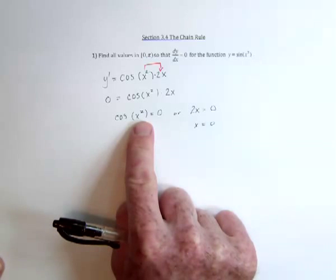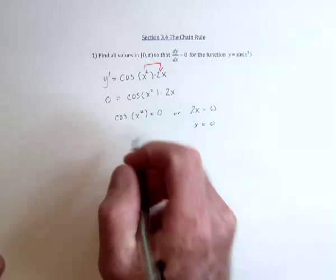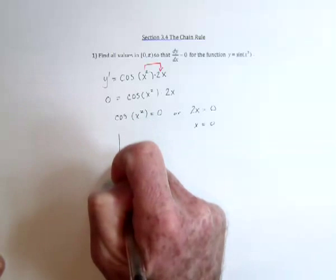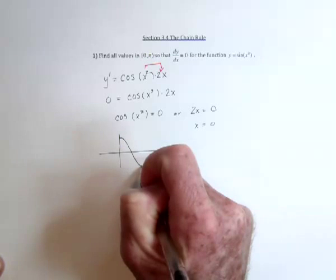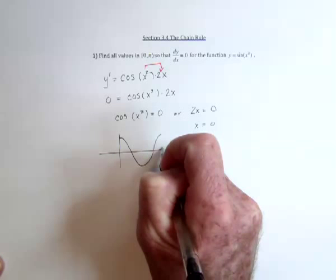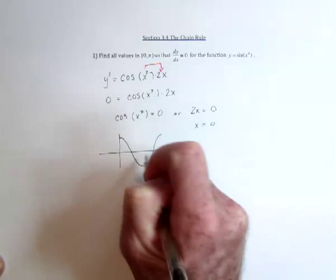And then for this one, we've got to find out where does cosine equal zero. So take a look at the graph of cosine, which starts at one, dips down to negative one, and then goes back up with a cycle of two pi.